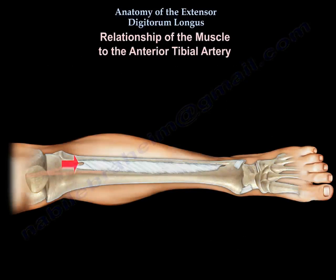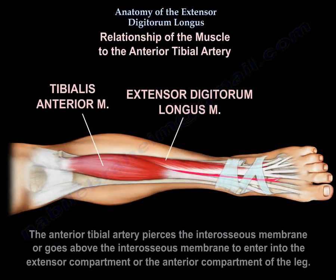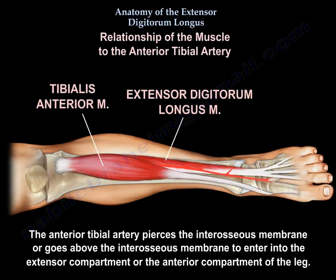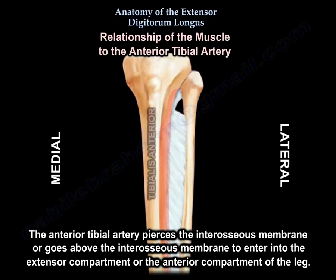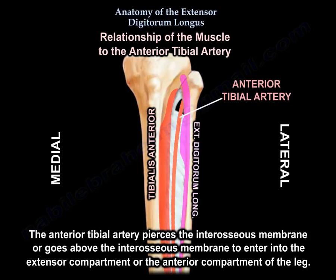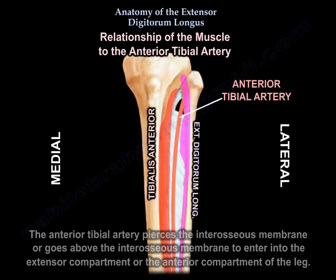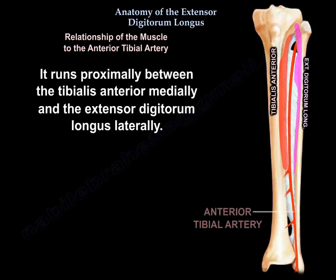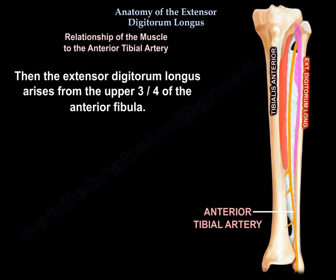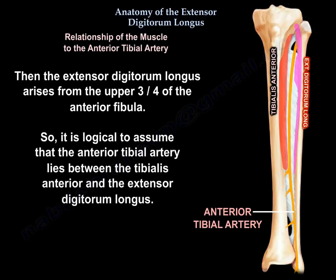Regarding the relationship of the muscle to the anterior tibial artery: the anterior tibial artery pierces or passes above the interosseous membrane to enter the anterior compartment of the leg. It runs proximally between the tibialis anterior medially and the extensor digitorum longus laterally. Since the extensor digitorum longus arises from the upper three-fourths of the anterior fibula, it is logical that the anterior tibial artery lies between the tibialis anterior and the extensor digitorum longus.